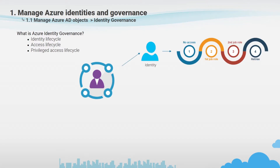Identity Lifecycle helps organizations achieve a balance between productivity — for example, how quickly can a person have access to the resources they need, such as when they join the organization — and in security terms, how should their access change over time, such as due to changes to that person's employment status.